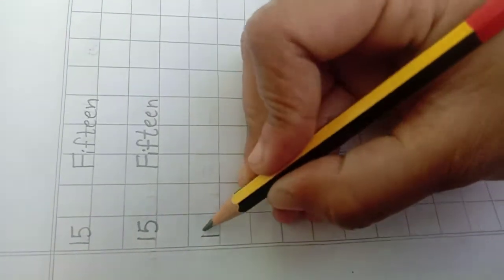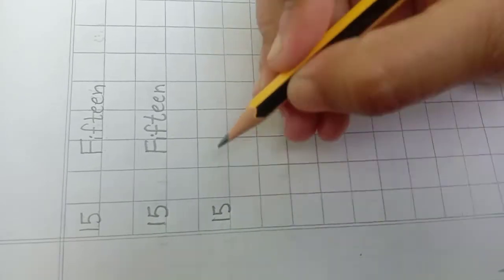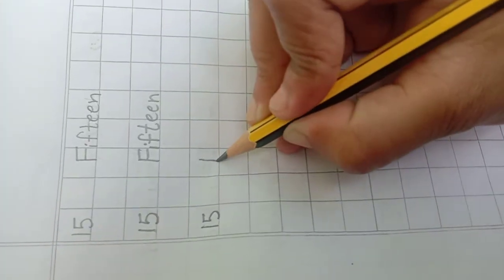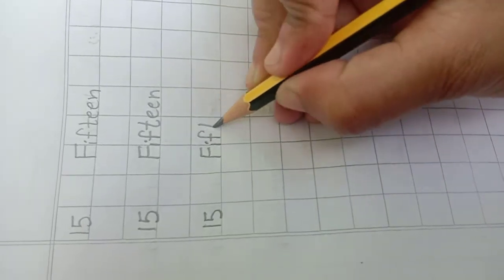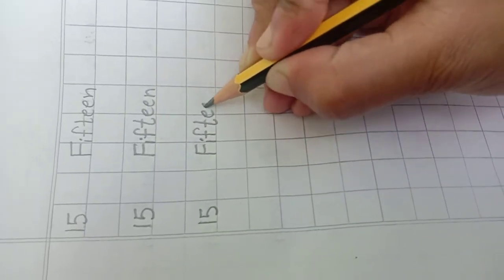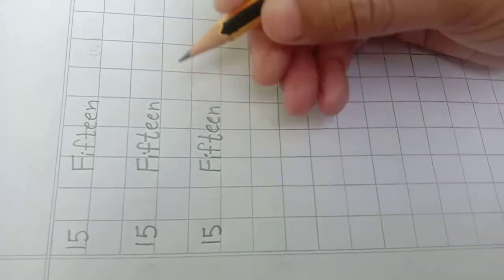Again, 1, 5, 15. Leave one box, what is the spelling of 15? F-I-F-T-E-E-N. 15. We complete this whole page and learn number name 15.